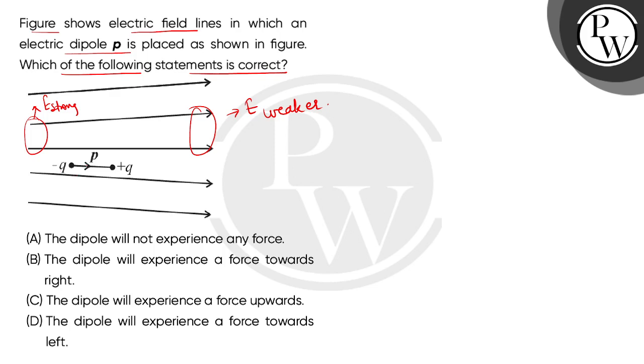Now if we look at this dipole, on the negative charge the force will be in the left direction, and because the electric field is strong, the force will also be strong. And on the positive charge, the force will be in the right direction. That force will be weaker because here the electric field is also weaker.